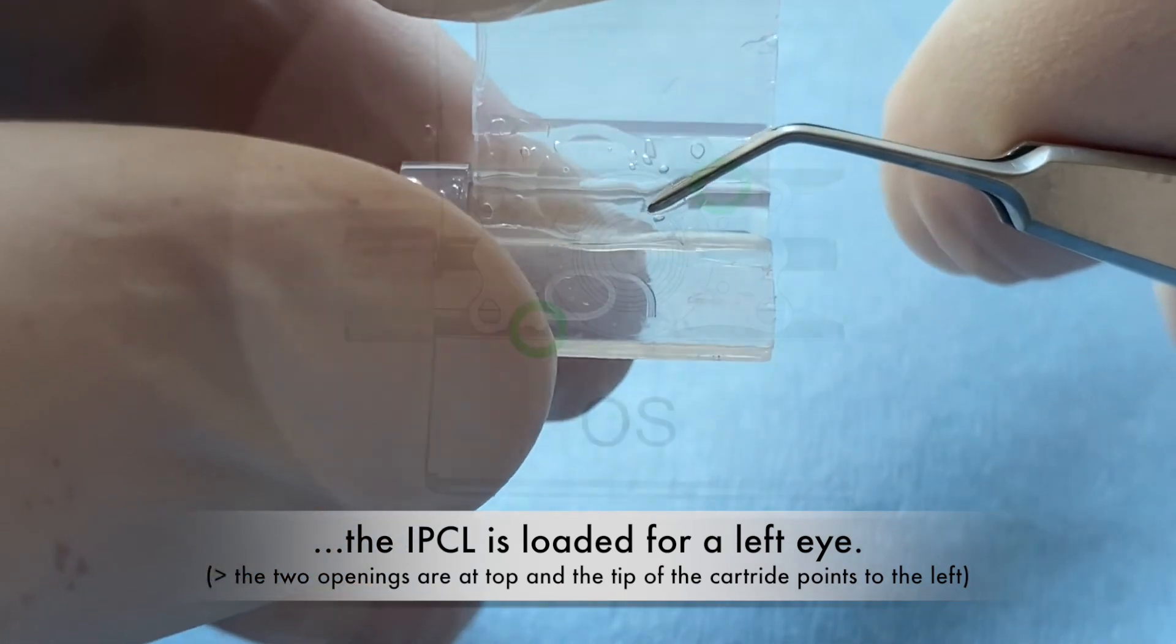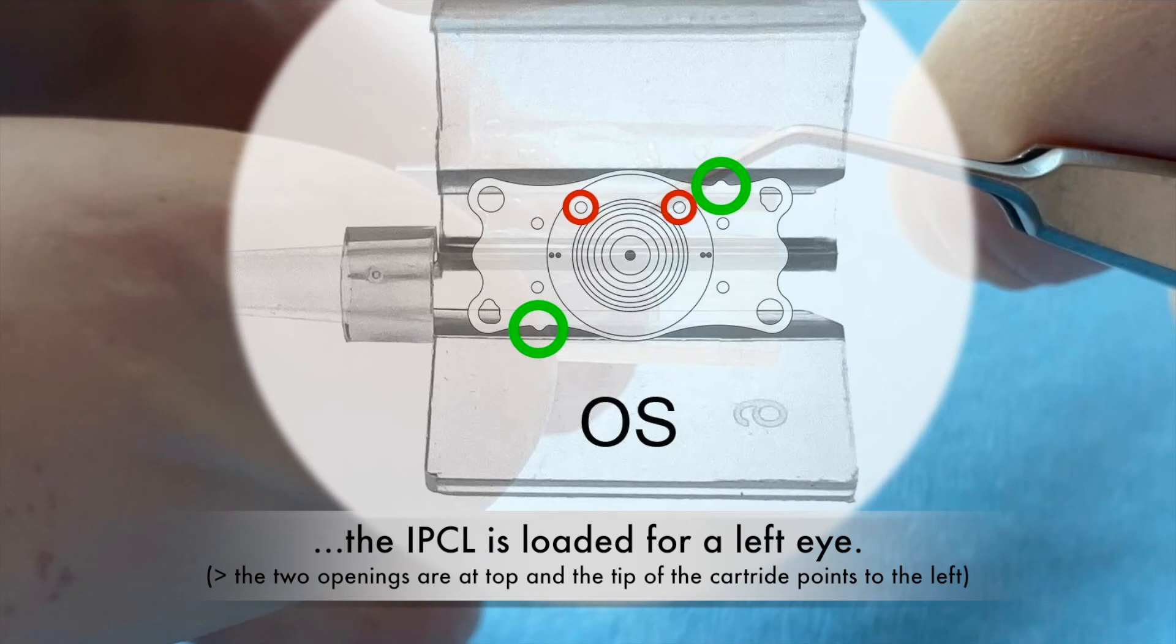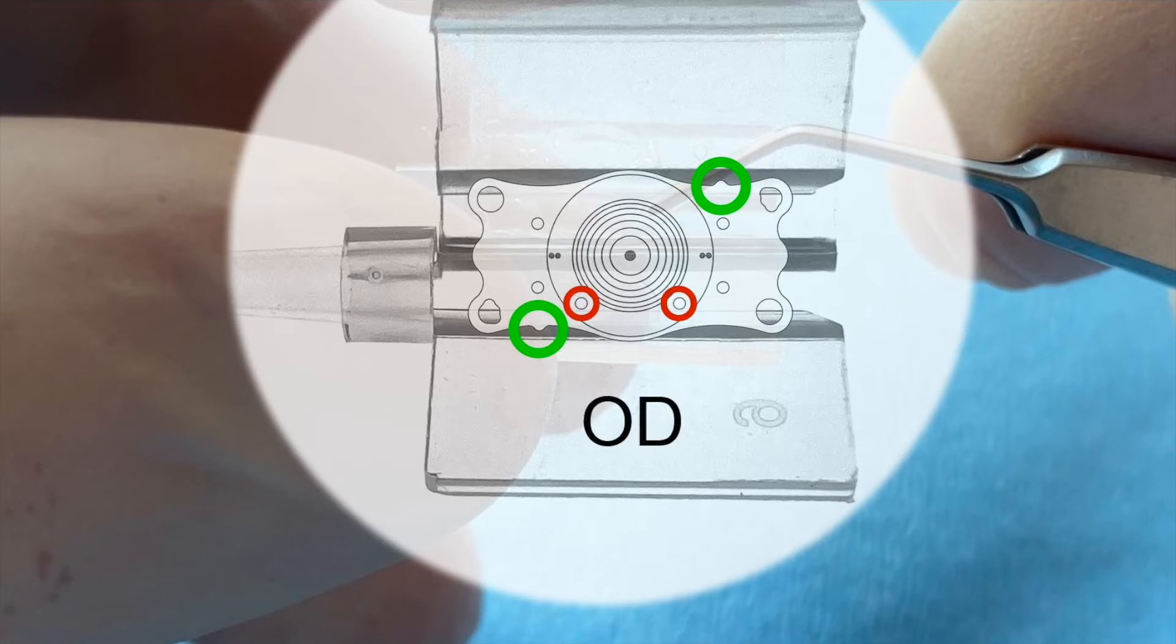The two openings are at top and the tip of the cartridge points to the left. For a right eye, the two openings should be at the bottom or the tip should point to the right.